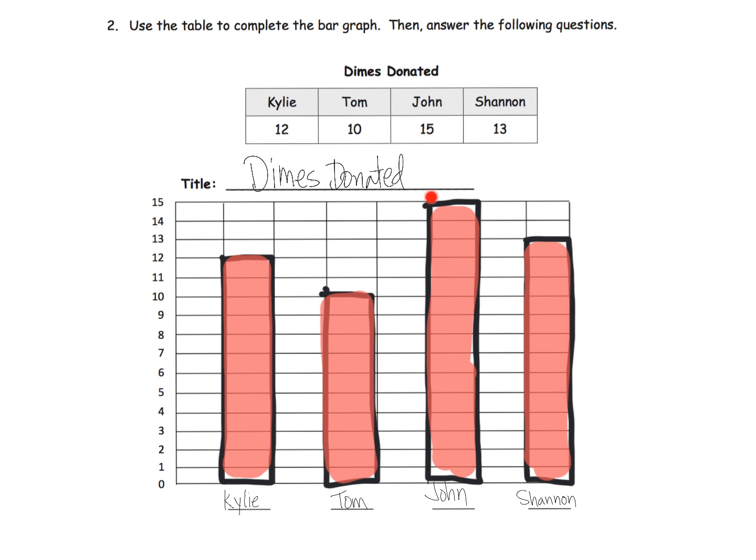So we could start there. We didn't have to look all the way over here at the 13. We just know that John is 15, Shannon is two less, 13, so we just start two lower—boom, right there. So there's a lot of ways that we can talk about how we fill this in, how we can be efficient without always having to count all of the spaces.